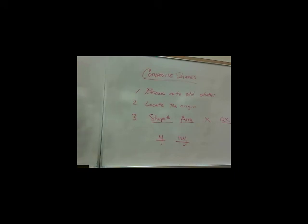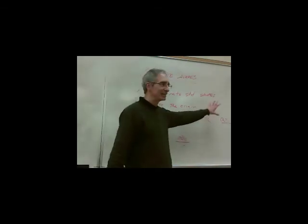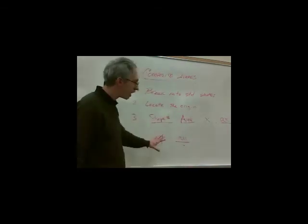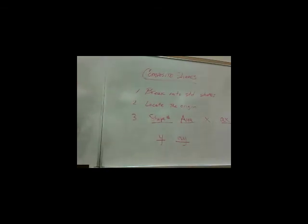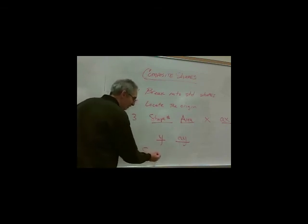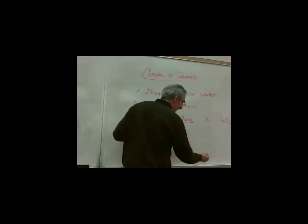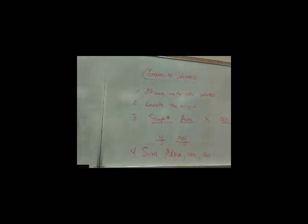Okay? So I'm going to create a table and keep all my values in this table. So I usually say, like, number or shape number, area, x, ax, y, and ay. Okay? What I'm going to do is I'm going to complete that table, and then I'm going to sum the area column, the ax column, and the ay column. All right? I'm going to sum up. I'm going to complete my table. I'm going to sum the area column, the ax column, and the ay column.